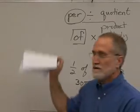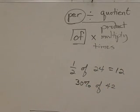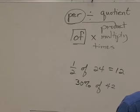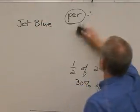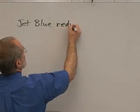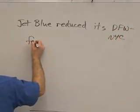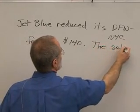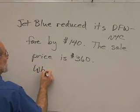I'm looking at the test study guide from chapters 5 and 6. One of the things it says for chapter 5 is to know how to translate word problems into equations to solve. There's a problem in the book that talks about JetBlue Airlines: if JetBlue reduced its Dallas-Fort Worth to New York City fare by $140, the sale price is $360. What was the original price?